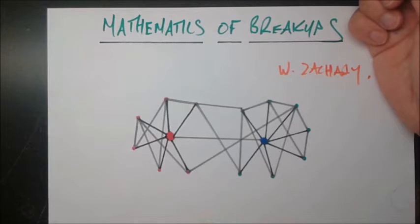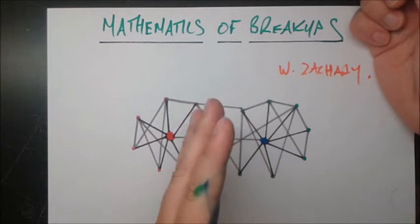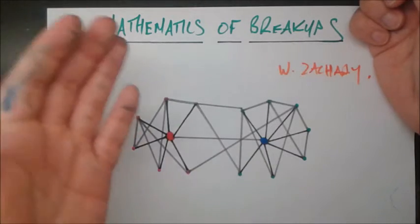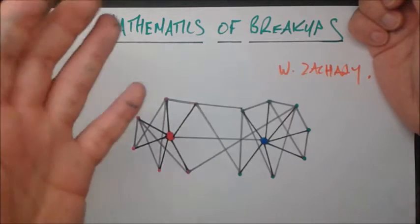Given this network, who holds the most political power? That is, if this network were to split into two networks, two smaller groups that have no connections between each other, who will be the leaders of those two groups and who will follow those leaders into those respective groups, leaving behind the other people.